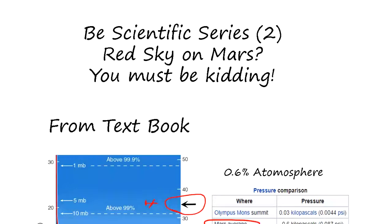Be Scientific Series 2: Red Sky on Mars? You must be kidding! So you see now there are a lot of Mars images floating around. The sky is red, sometimes pink, sometimes white. Are you sure the sky color on Mars is like that? Well, there is a very scientific foundation on sky color and you cannot ignore that.